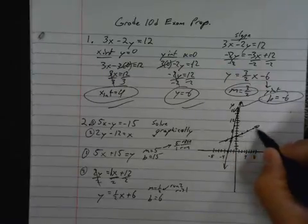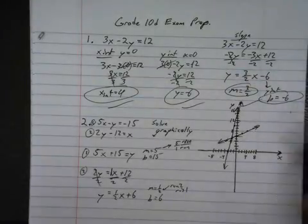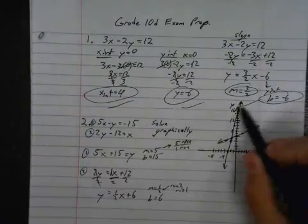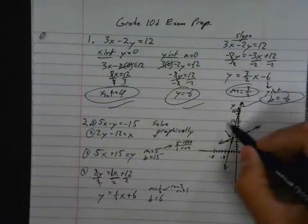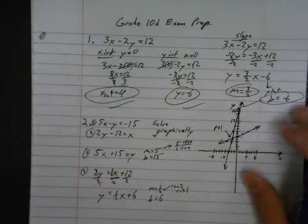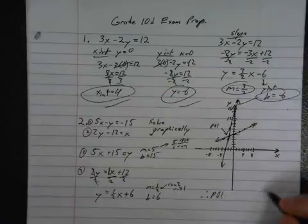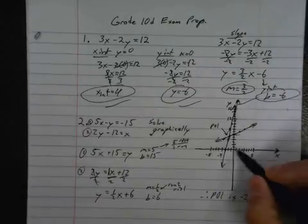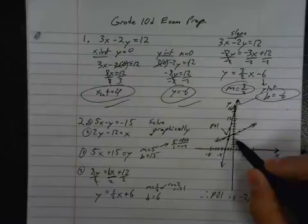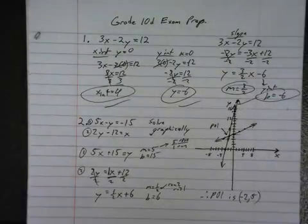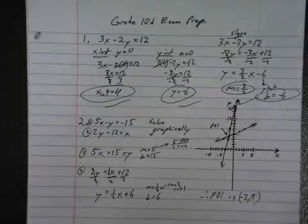So I'm not going to go much farther than that. So, graphing: plot your b value, rise and run to all your other points. Make sure you go in both directions, because in this case your POI is back here. The solution is the point of intersection. Therefore, our solution, the POI, is negative 2, comma 5. Alright, 1 and 2 are done. I'll do 3 in another video.